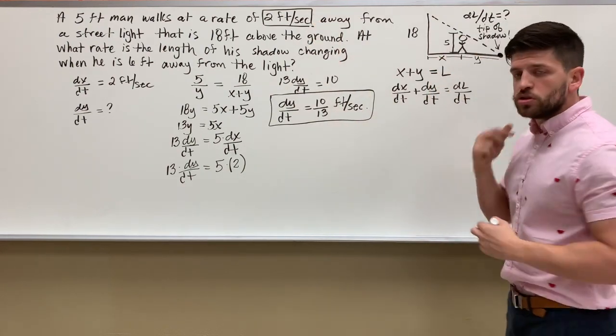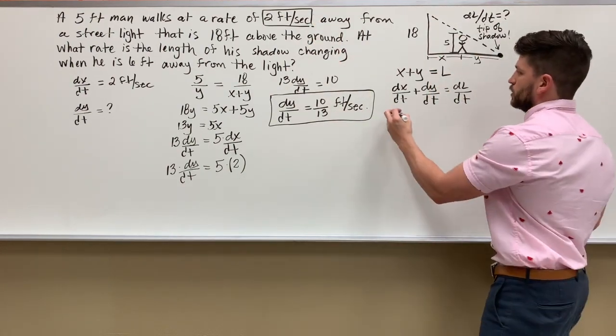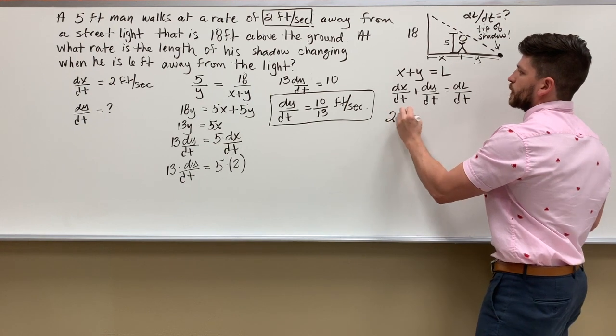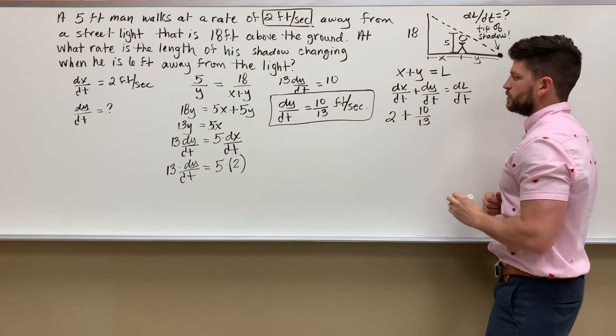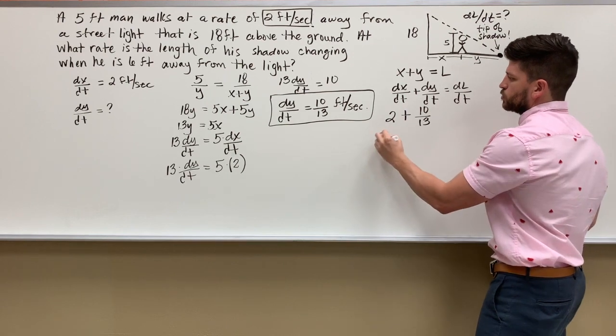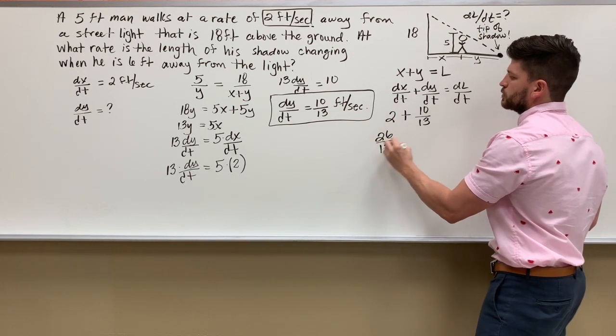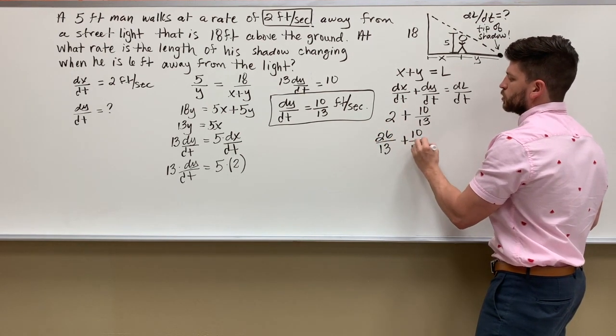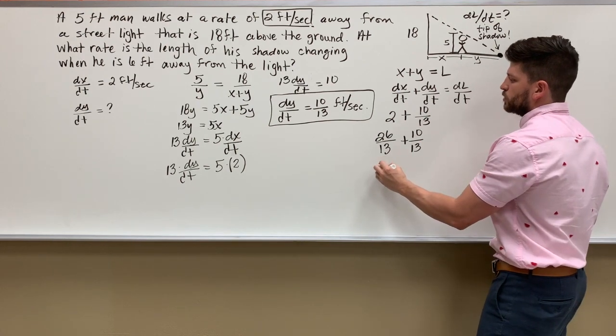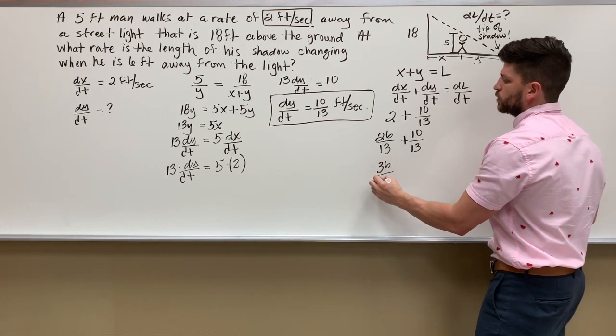We're just going to add those two numbers together. So we have 2 plus 10 over 13, and 2 can be converted to 26 over 13. So that rate is just going to be 36 over 13, and the units will stay the same - feet per second. And there you have it.